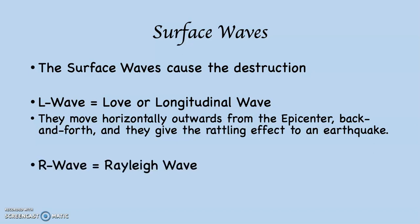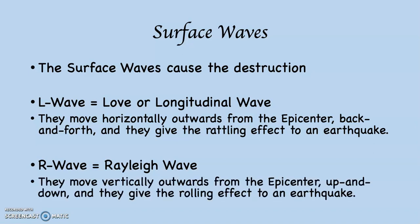The other type of surface wave is called the R wave, or Rayleigh wave, named after a very famous scientist. They move vertically outwards from the epicenter — in other words, up and down — and they give the rolling effect to an earthquake. If you've been in earthquakes, you know there are rattling earthquakes and rolling earthquakes. You can imagine that if you have the back and forth and the up and down hitting your house simultaneously, this is not good for the structural integrity of your building.